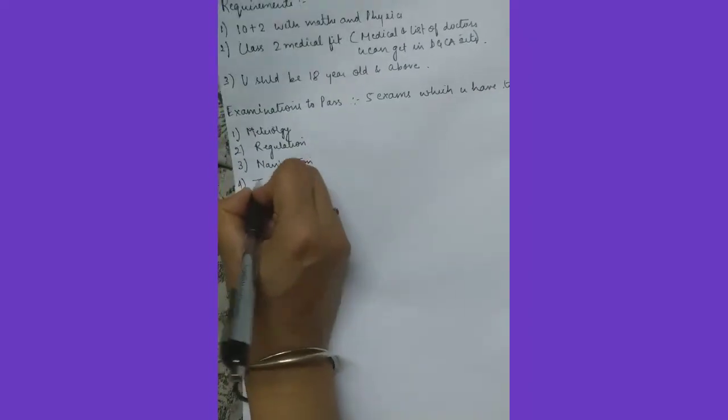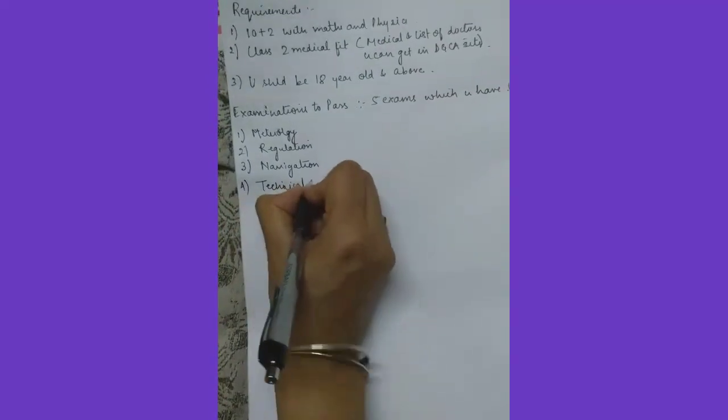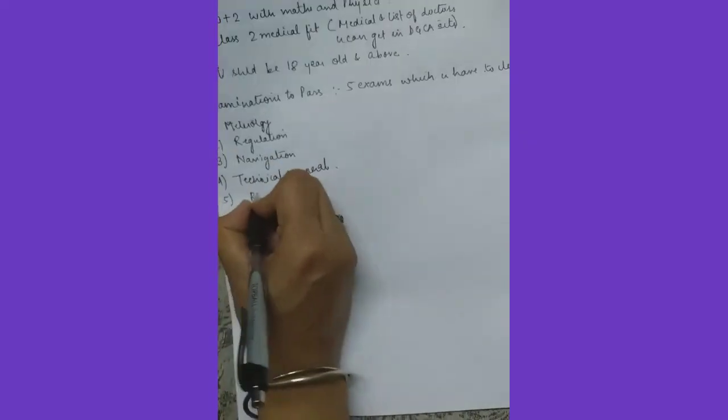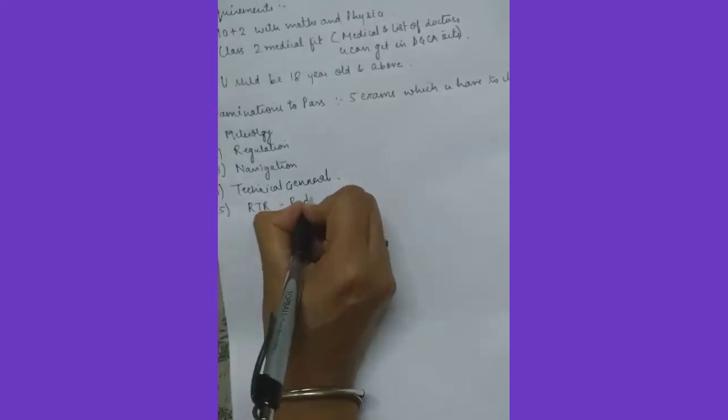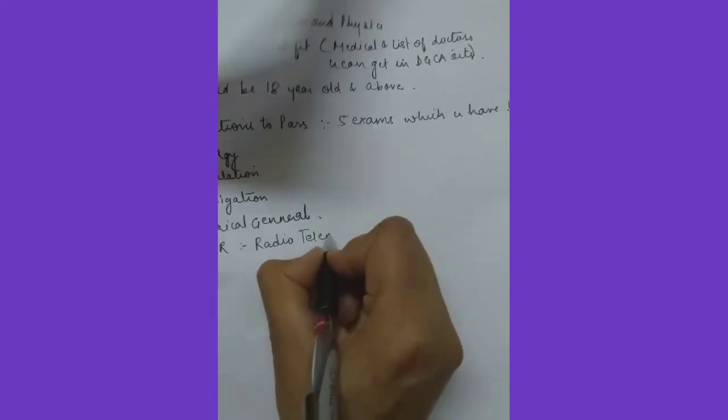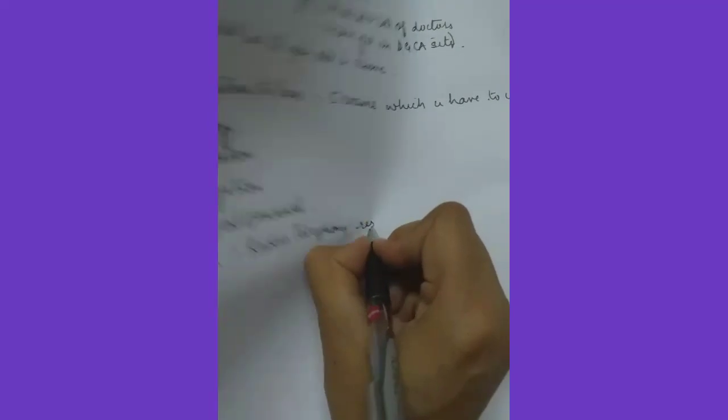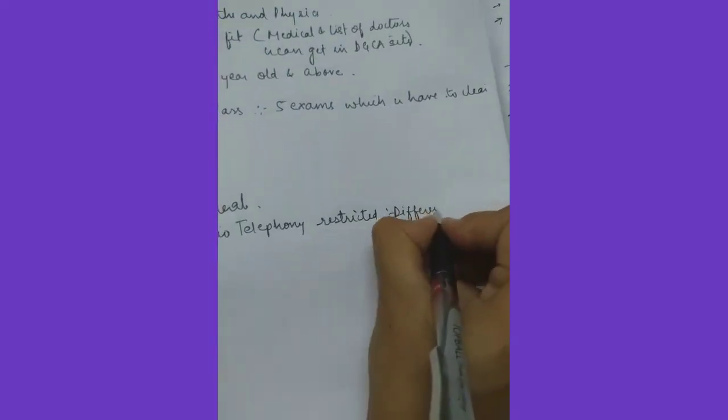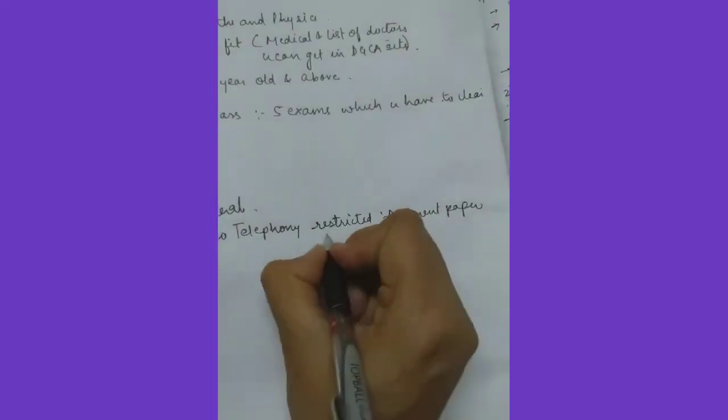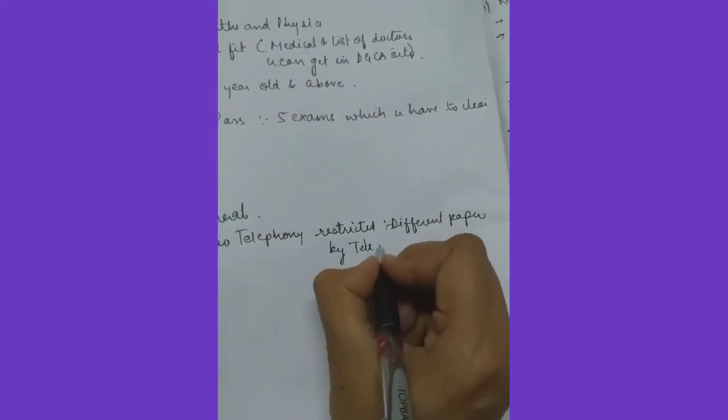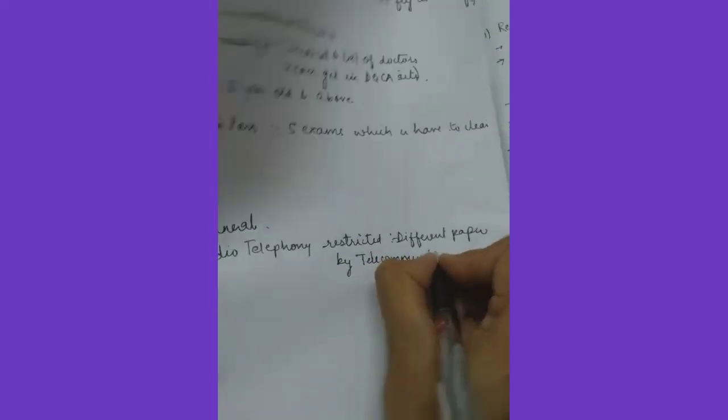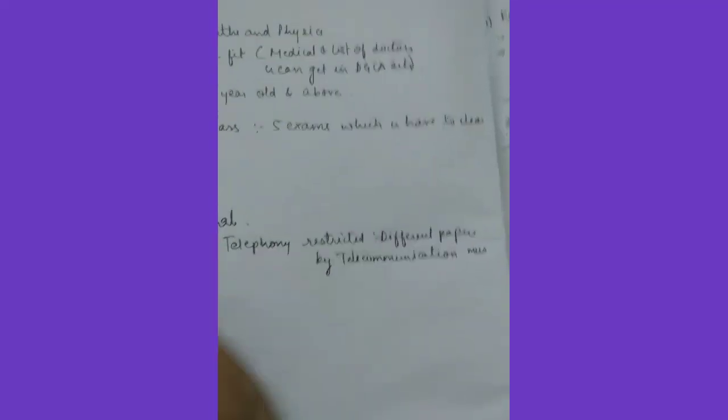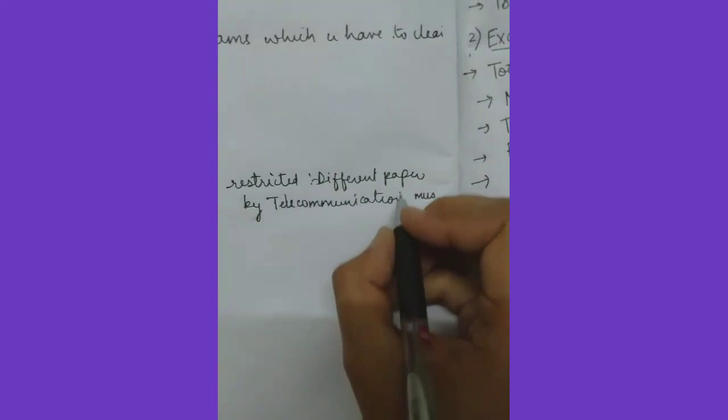The fourth examination is technical journal, and the fifth one is RTR, that is radio telephony. So it's a different paper by telecommunication ministry.